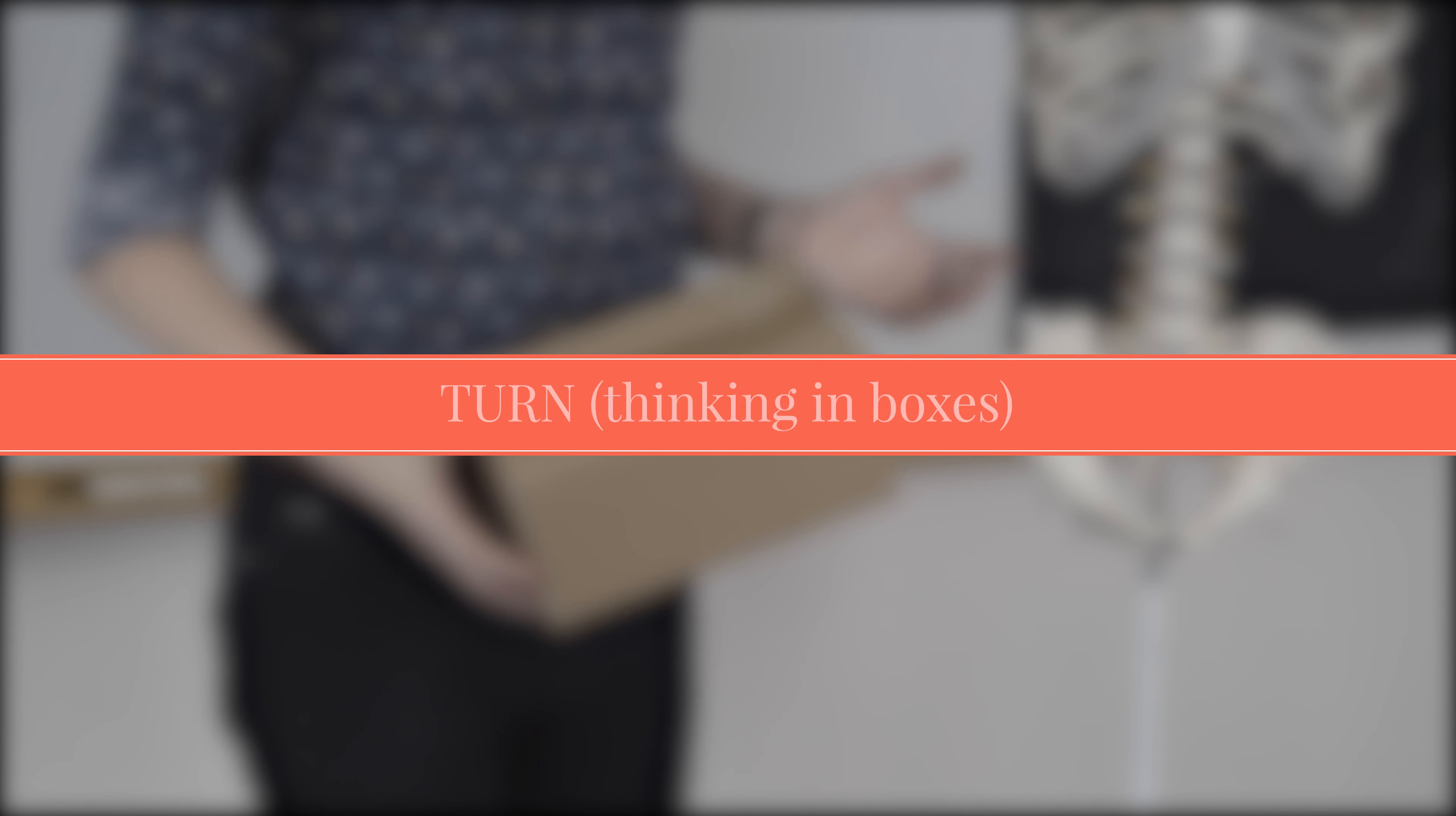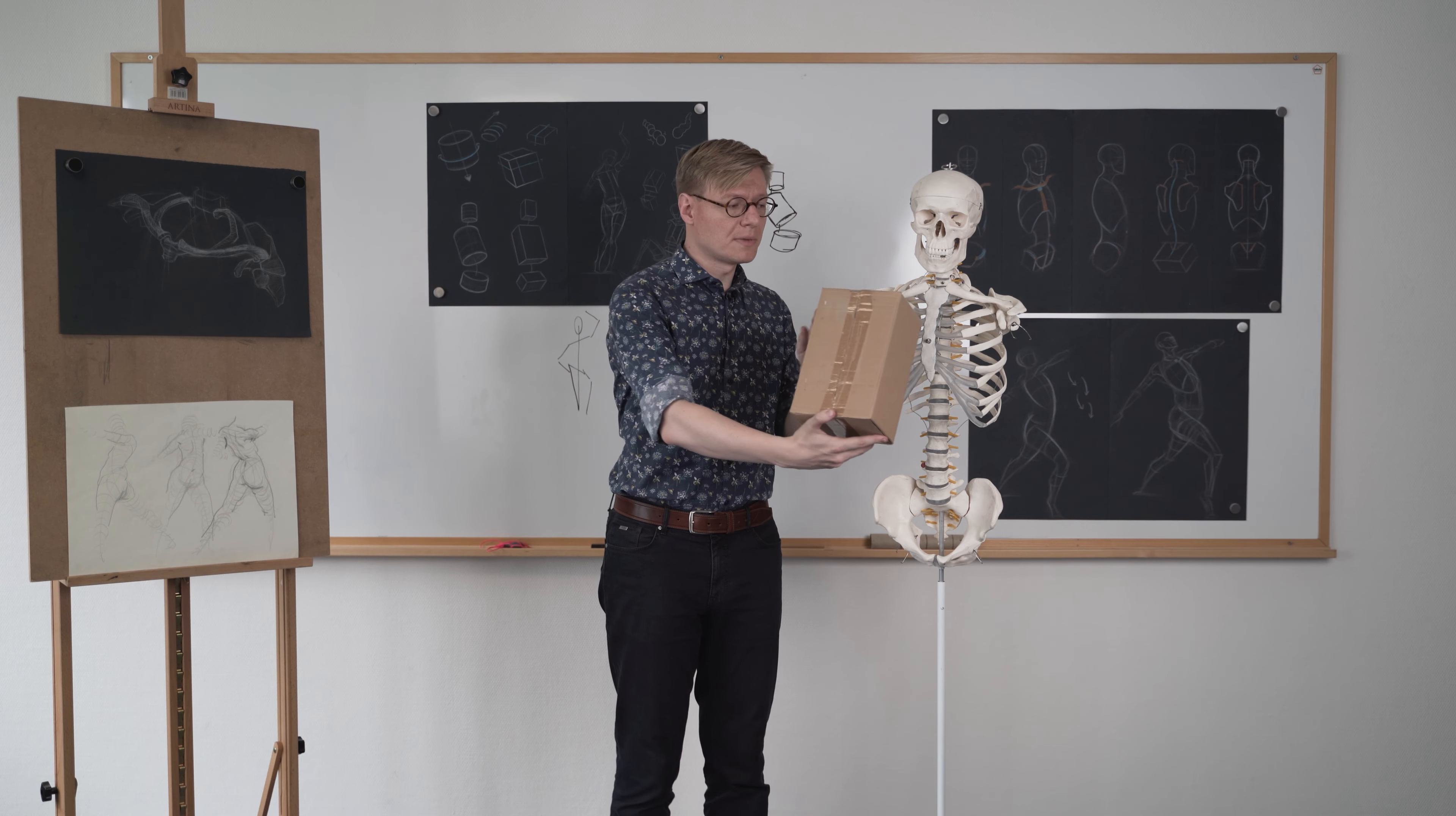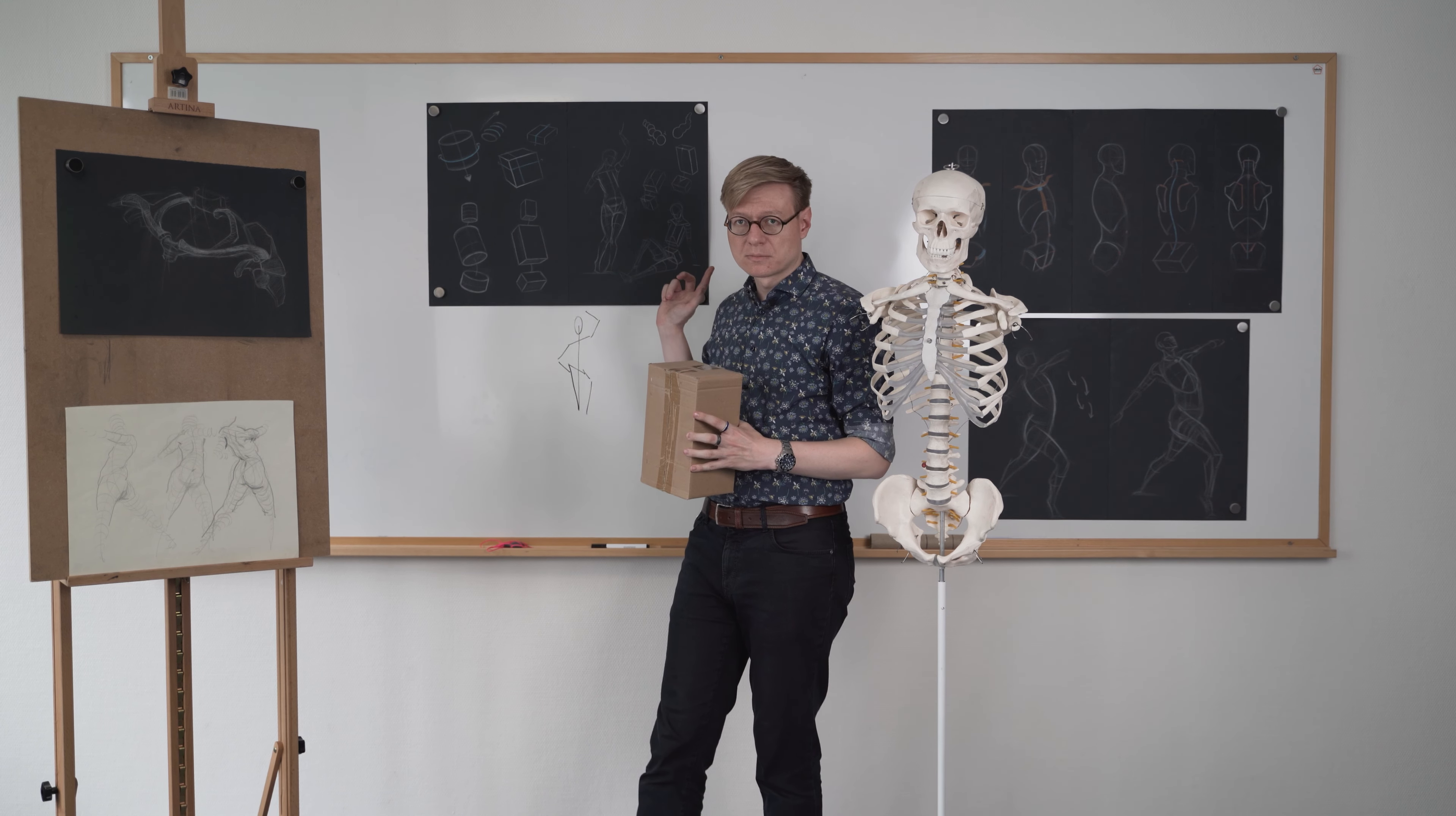Another way of thinking about the volumes of the human body is in form of boxes. If we replace the volume of the pelvis with a box shape, it might look something like this. We would have a forward leaning box shape. The rib cage, however, we have learned leans back. It might look something like this, where we can see the underside of the plane. The box shape is going to allow us to draw in three dimensions. This will allow us to also show turning of the body, which we haven't been able to do with these two steps prior.